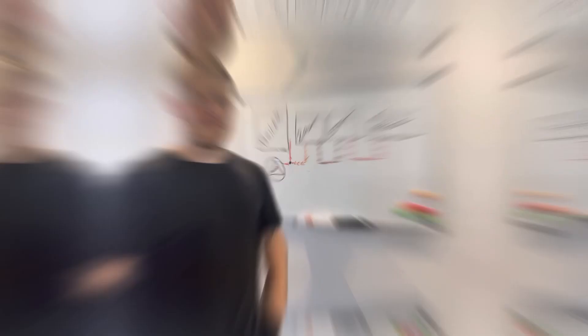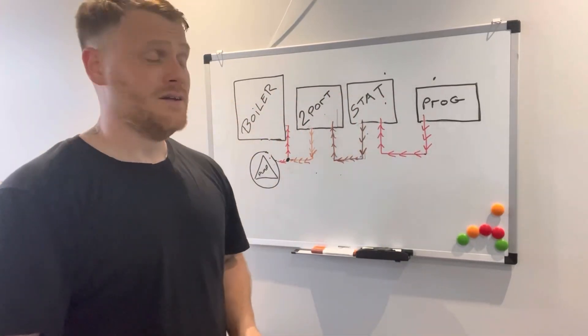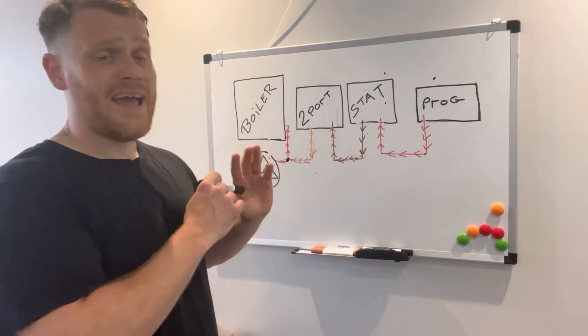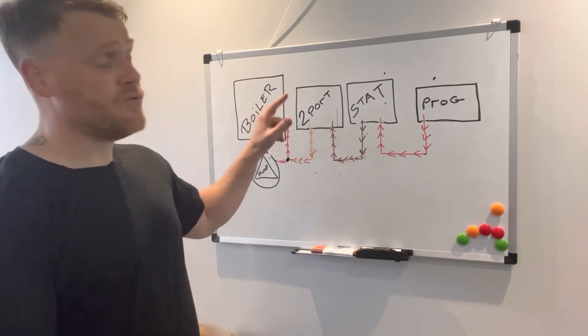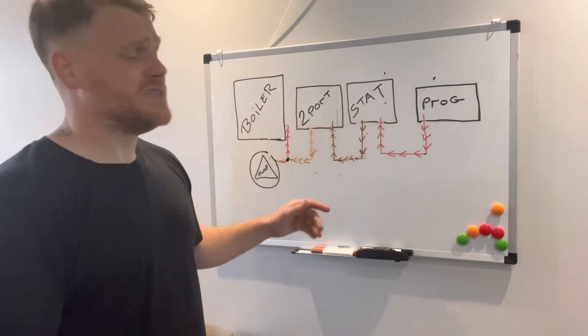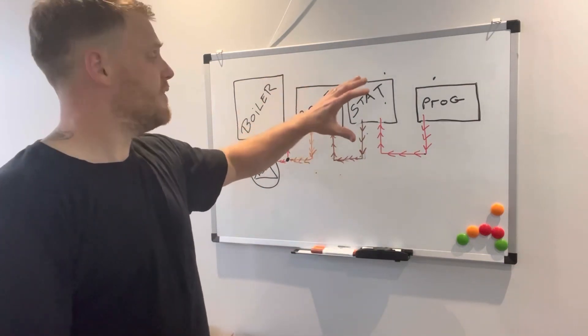Here it is, this is a simplified version of an S-plan. All I've done is got rid of all the earths, all the neutrals, everything apart from four main components. Obviously on a two-port system you've got two two-ports, but what you gotta do is mirror this setup, flip it, and that's both sides.